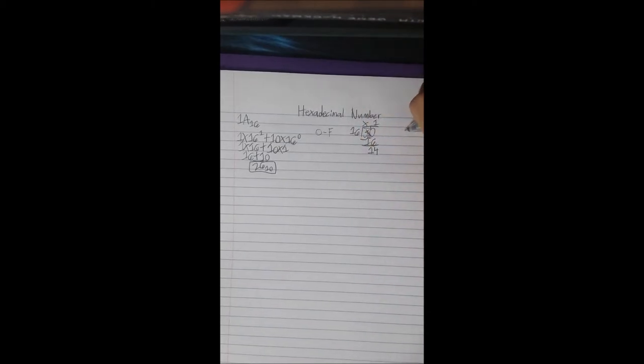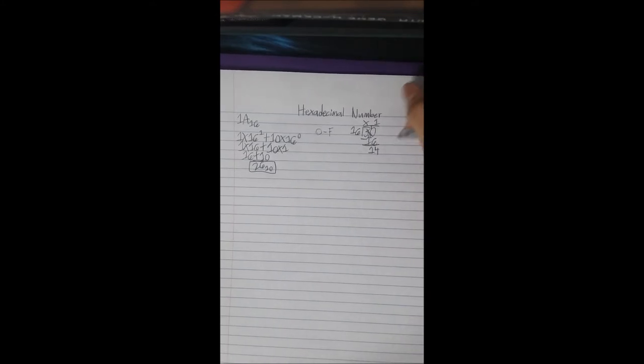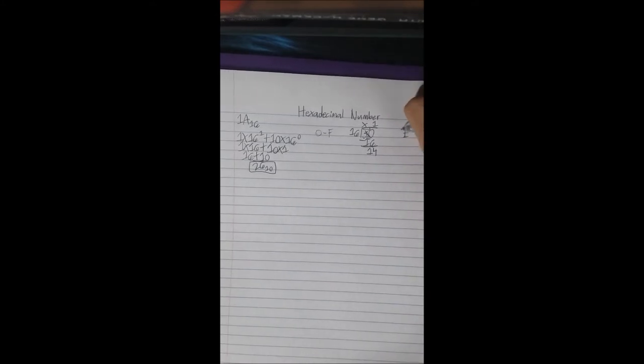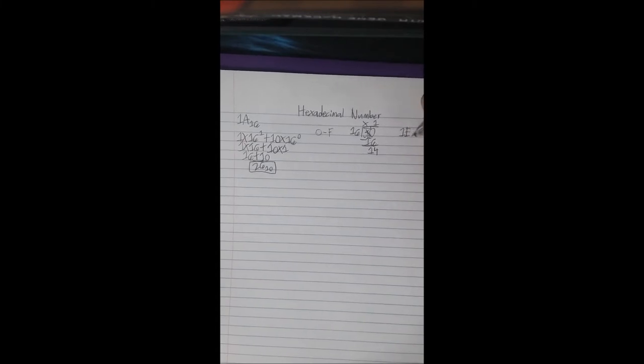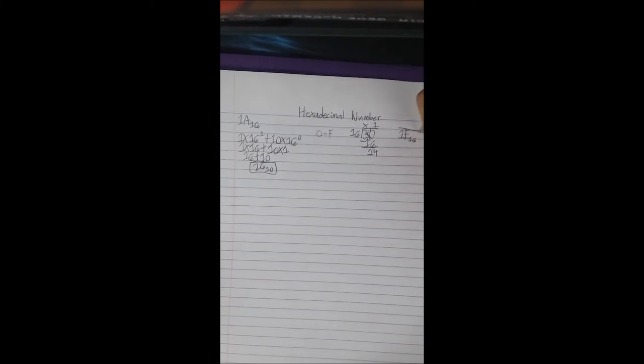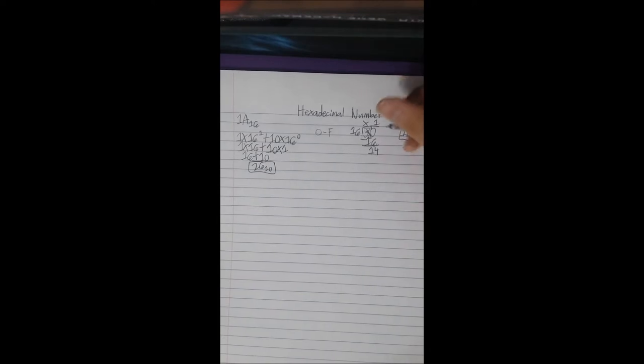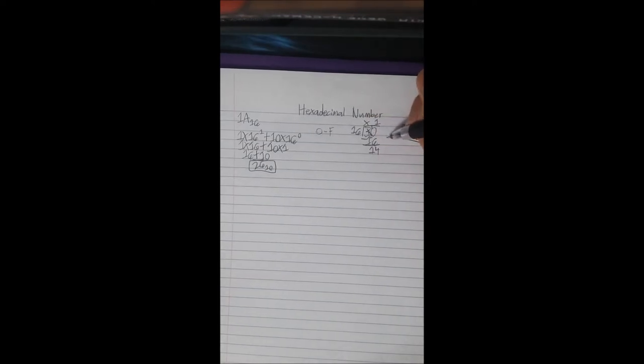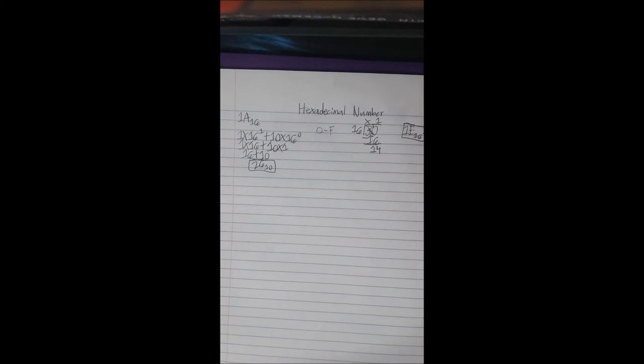Then your remainder goes first, and then your product last. If it's going to be divided by 16, you can do it again. Since it can't, 14 is E by the way.